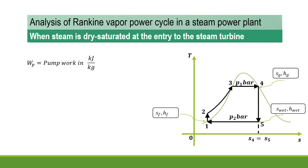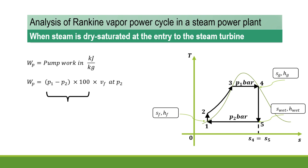Next, we find the pump work. The feed pump handles water, so pump work can be expressed as the change in pressure multiplied by the specific volume at condenser pressure. The pressure difference (boiler pressure minus condenser pressure) is in bar, multiplied by 100 to convert to kN/m². Specific volume is in m³/kg, giving units of kN·m/kg, which equals kJ/kg. So pump work is obtained in kJ/kg.